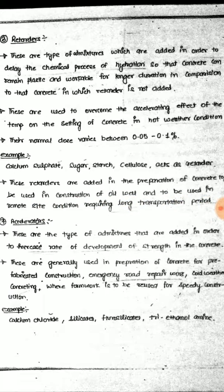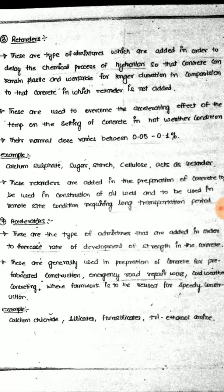Retarders are the type of admixtures added in order to delay the chemical process of hydration, so that concrete can remain plastic and workable for a longer duration compared to concrete without retarder. These are used to counteract the accelerating effect of temperature on the setting of concrete in hot weather conditions. Their normal dose varies between 0.05 to 0.1 percent.